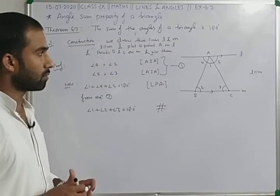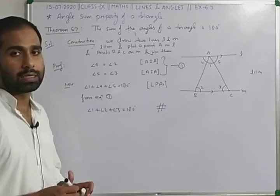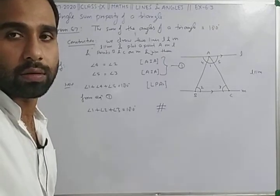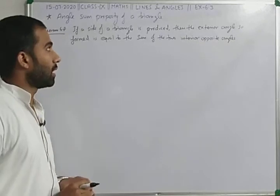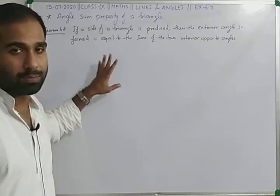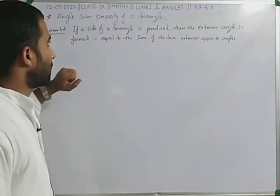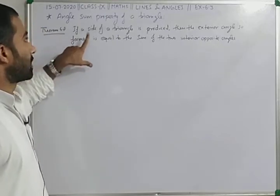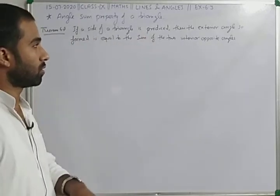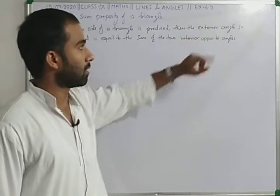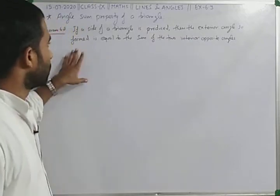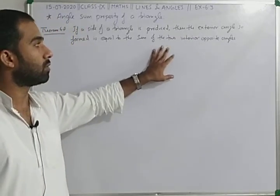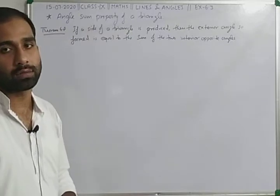I hope you understood — this is a very easy theorem. Now, this is the last theorem of this chapter, Lines and Angles. Theorem 6.8 says: if a side of a triangle is produced, then the exterior angle so formed is equal to the sum of the two interior opposite angles.